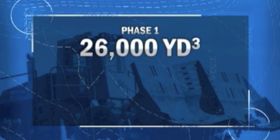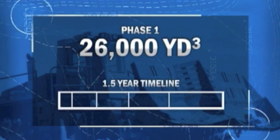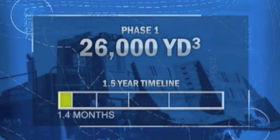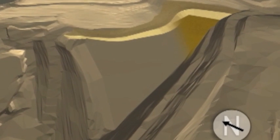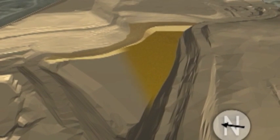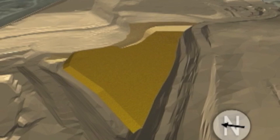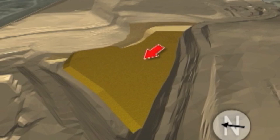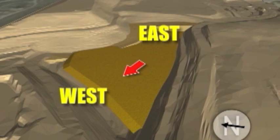Phase 1 represents almost 26,000 cubic yards of filling. We anticipate this will take 1.4 months to complete. Once the access road and Phase 1 has been constructed, you'll begin placing waste across the entire deck of the recently lined area. In order to avoid creating a drainage problem, you will generally start at the high end and fill in the direction of the slope. In this case, that means you start at the east end of the lined area and move generally to the west.